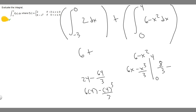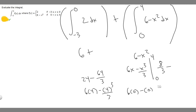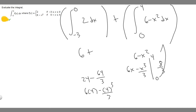Then we subtract the value at 0. Plugging in 0: 6 times 0 is 0, and 0 cubed over 3 is 0. So the whole thing becomes 0. We're just subtracting 0, which doesn't change anything. So the answer to this second integral is 8 over 3.